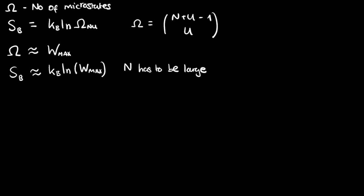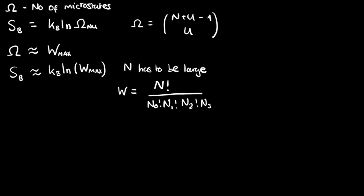In the last video I also told you the formula for W, the macrostate multiplicity — the number of permutations per combination. W equals N factorial divided by n0 factorial times n1 factorial times n2 factorial times n3 factorial, and so on. Each of these terms is the number of particles in energy level zero, one, two, etc. So if you had three particles in energy level two, that number would be three. That's how we work out W, and now we have a formula for it.